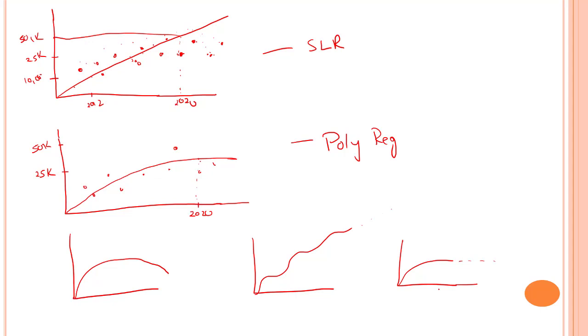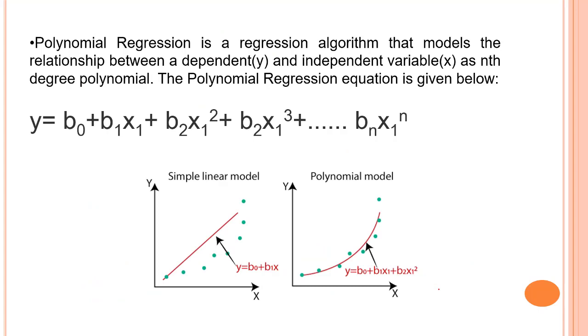Polynomial regression is the special case of multiple linear regression in ML because we add some polynomial terms to the multiple linear regression equation to convert it into a polynomial regression. You can see that we only have a single predictor over there, that is x1, and all of these are in the nth degree. It totally depends on how much power you want. The highest power you go, the line curves more. So this is the equation for polynomial regression.